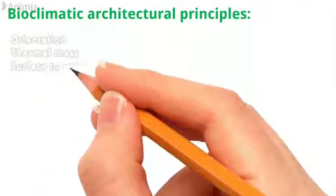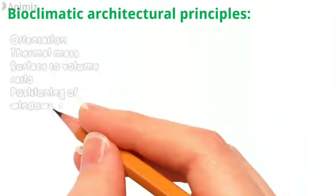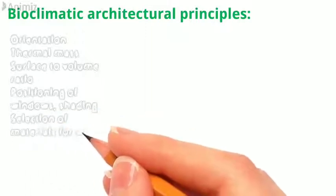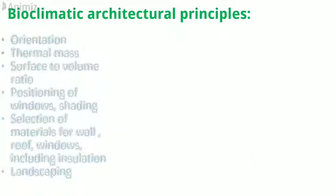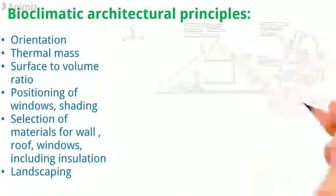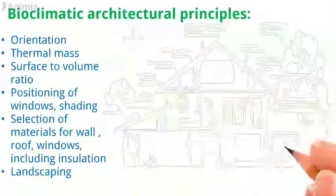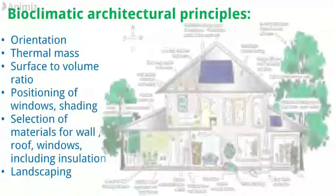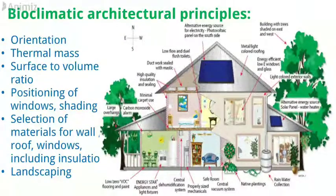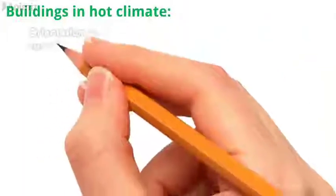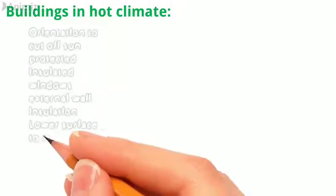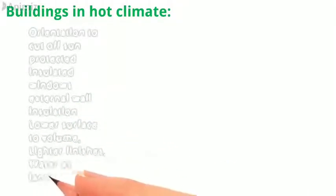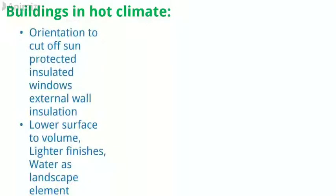Orientation, thermal mass, surface-to-volume ratio, positioning of windows, shading, selection of materials for wall, roof, windows, including insulation landscaping. Orientation to cut off sun, protected insulated windows, external wall insulation, lower surface-to-volume, lighter finishes, water as landscape element.